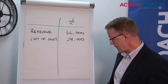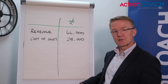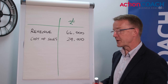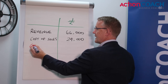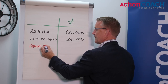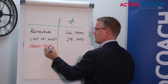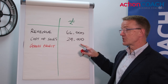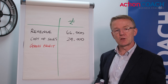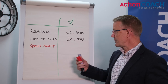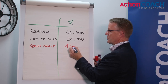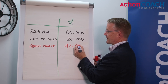That gives us the first important number in the business, and that is your gross profit. To calculate your gross profit we simply subtract the cost of sales from the revenue. So in this business the gross profit is £42,000.